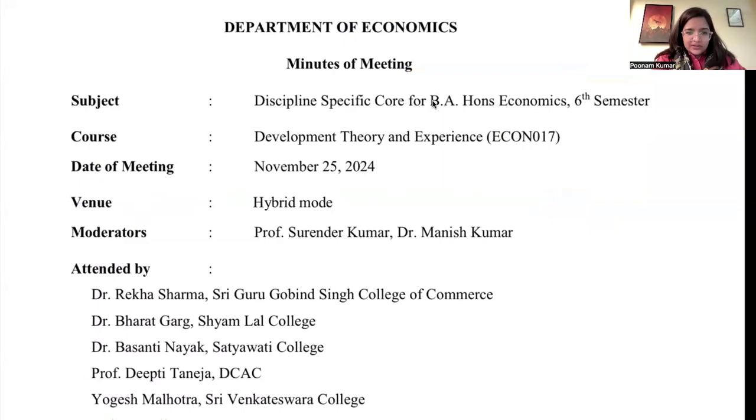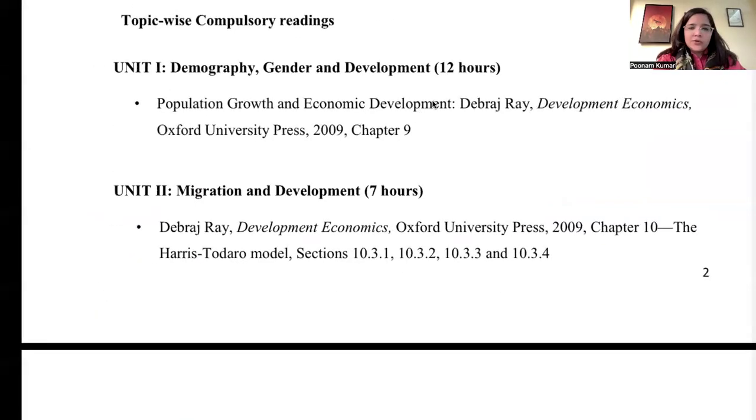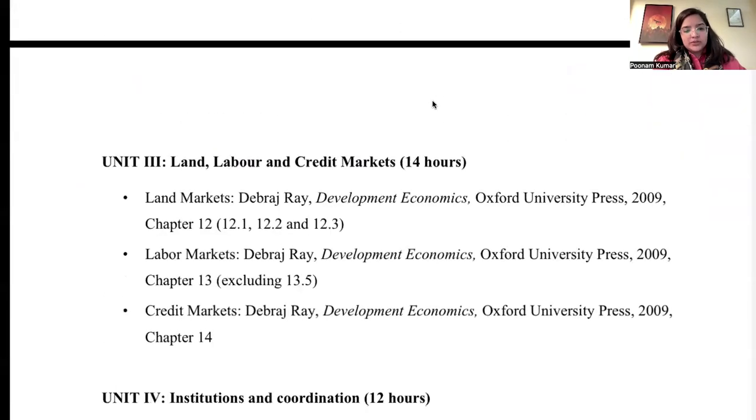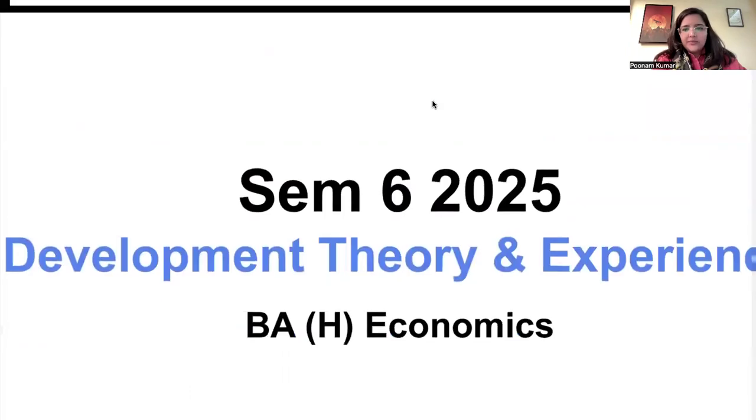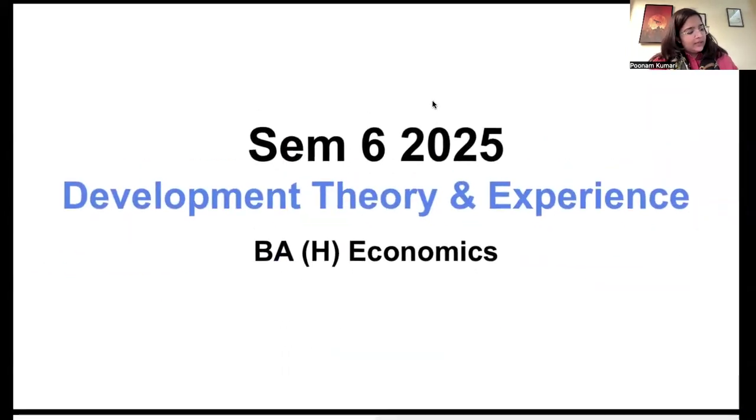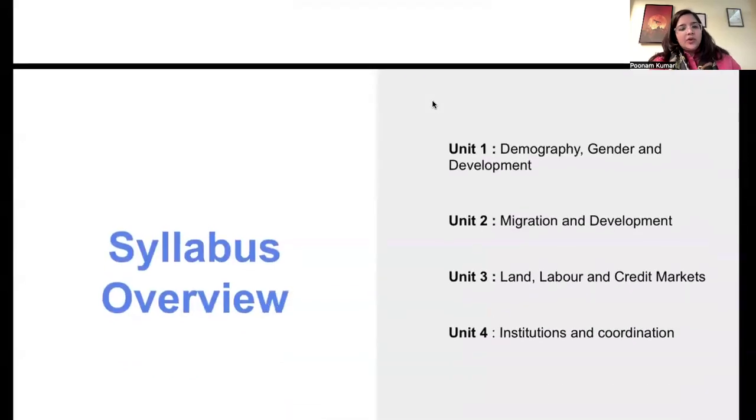This is only for economics honors. So what units are there, what are the readings, what books, what will be the exam pattern, all these things are mentioned. I've prepared a PPT for the same. So this is your paper, Development Theory and Experiences. Your entire paper is divided into four units. Unit 1, 2, 3, 4. And each of these units, what topics will be there, what books, let's see that.